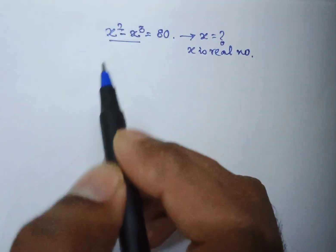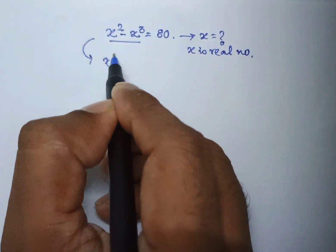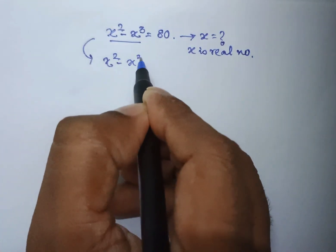How to solve for x? Real value for x. x square minus x cube can be written as 80,